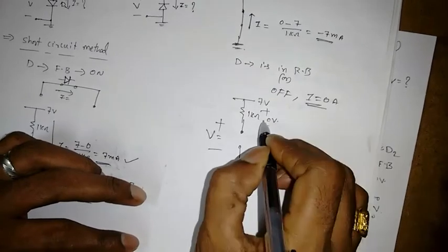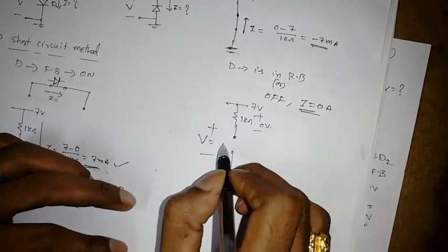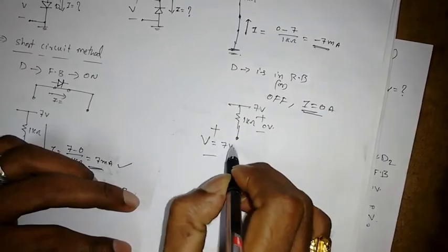So what is the, so 7 volt is there supply, 0 volt is dropped. So that overall drop will be across this diode.